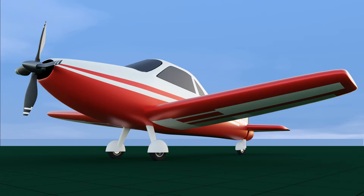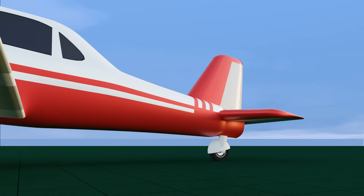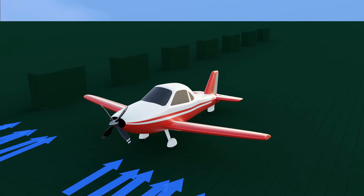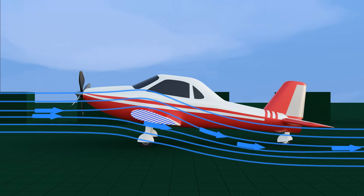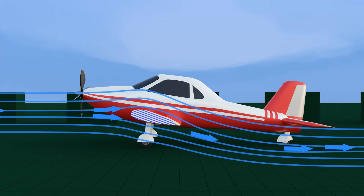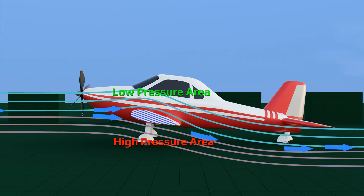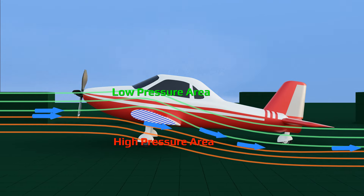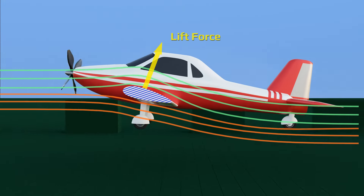When an airplane moves forward using propeller thrust or jet thrust, relative airflow happens in the backward direction around the airfoil-shaped wings. On the top side of the wing, air flows faster than the bottom side due to this airfoil design. As per Bernoulli's principle, a high-pressure zone develops at the bottom side and a low-pressure zone on the top side of the wings. This generates lift force to make it fly in the air.